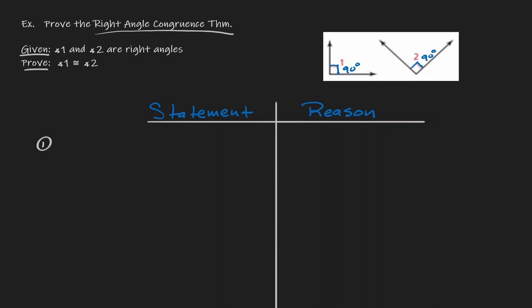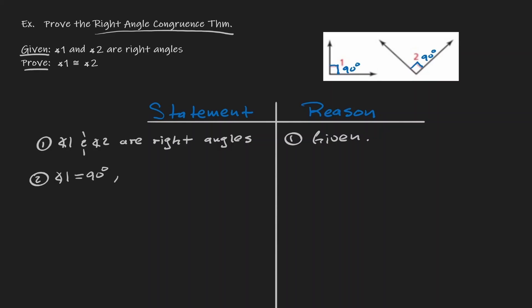How do we start? We always start the same way. Write down the given: angle one and angle two are right angles. This is just the given — we always start that way. Now, if angle one and angle two are right angles, then angle one has a measurement of 90 degrees and angle two has a measurement of 90 degrees as well. What's the reasoning? This is how we define right angles — so the reason is: definition of right angles.